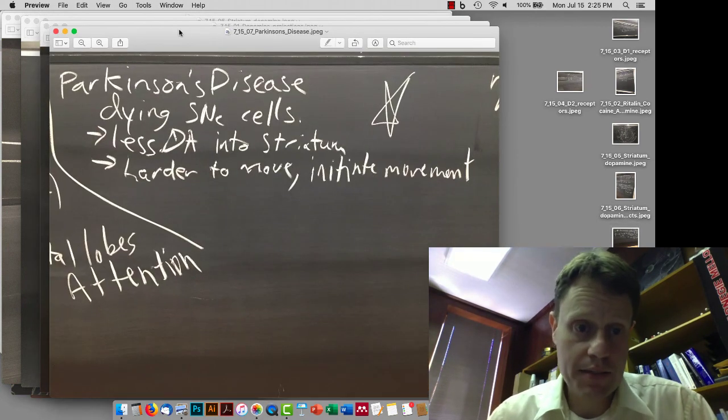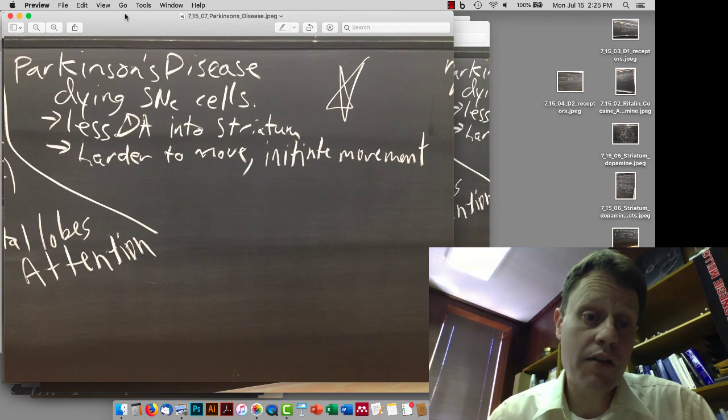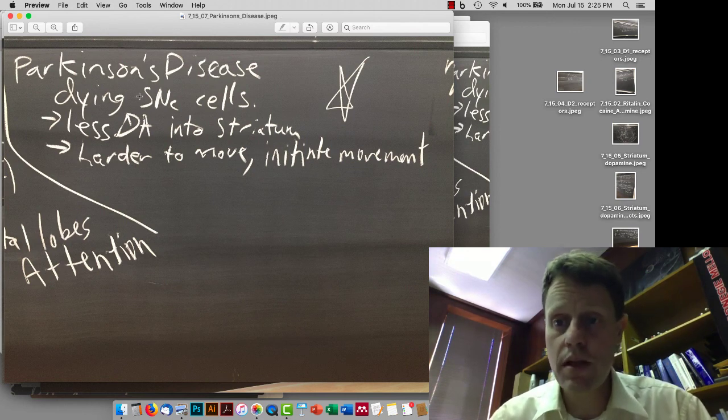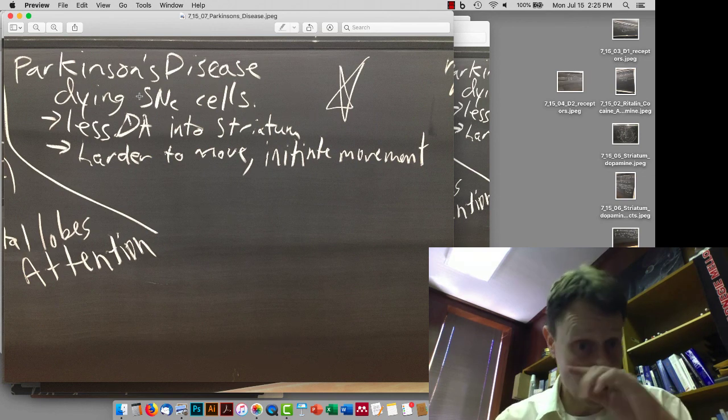In Parkinson's disease, the substantia nigra cells die, and that means there's less dopamine overall in the striatum, and makes it harder to move, especially to start initiating movements. We'll return to this a little bit when we talk about Tourette's syndrome, and also again a few more times throughout the semester.